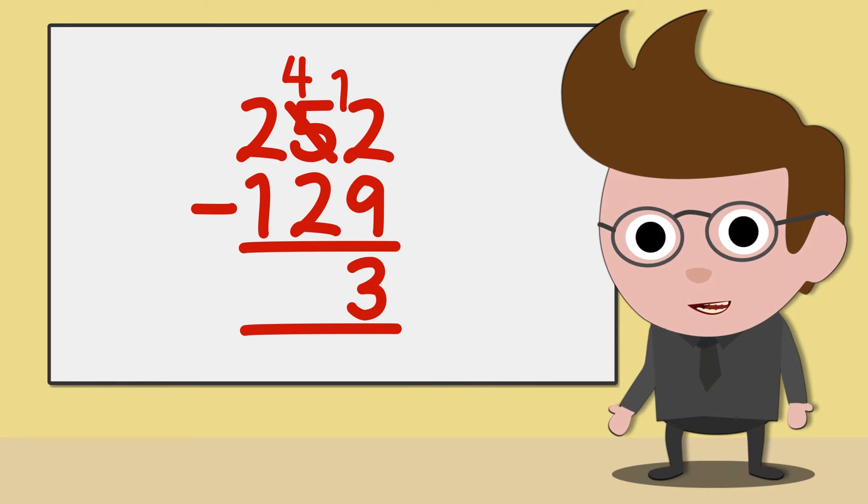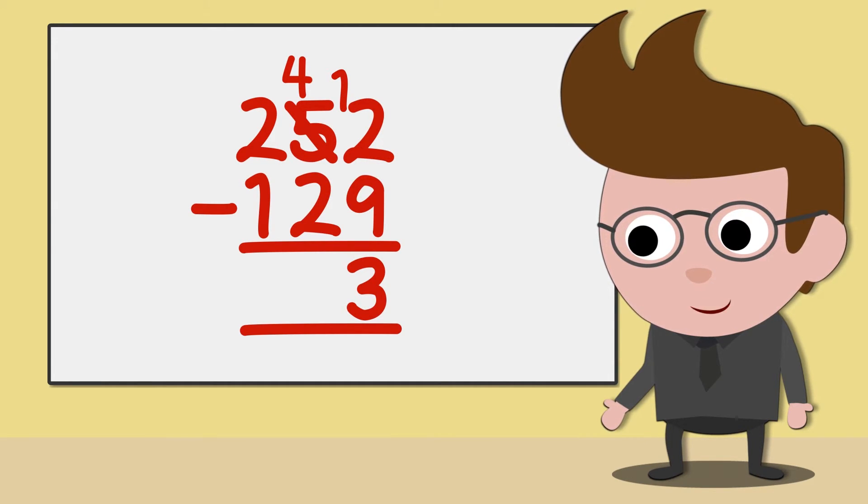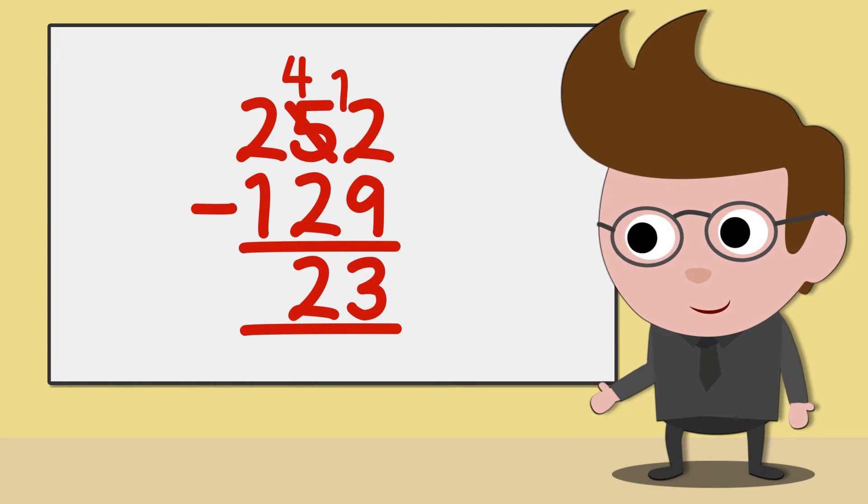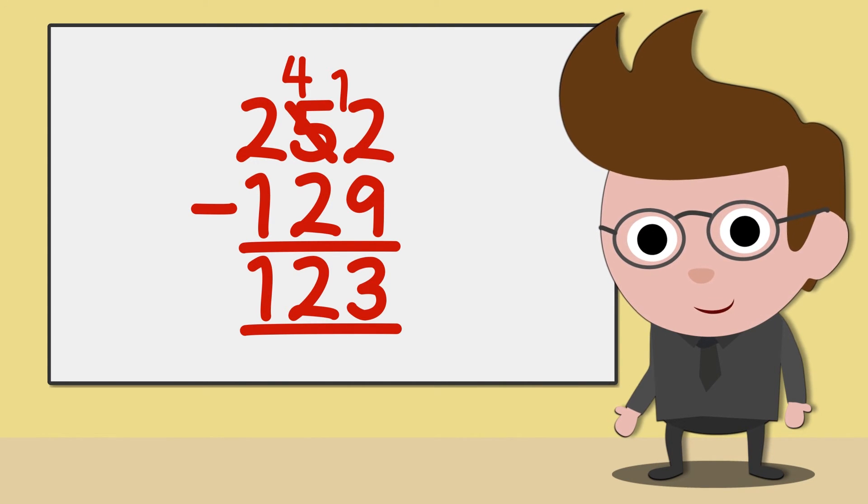Next, we move on to our tens column. 40 take away 20 is 20, and the hundreds, 200 take away 100 leaves you with 100. The answer is 123.